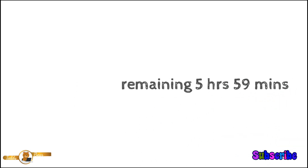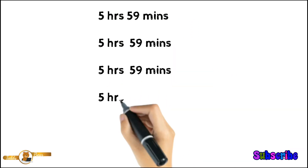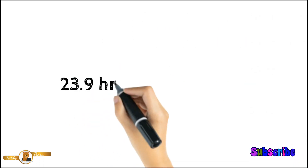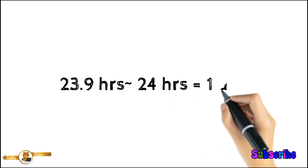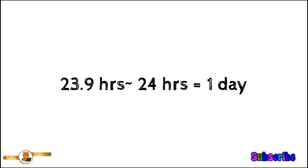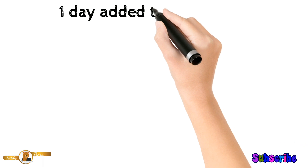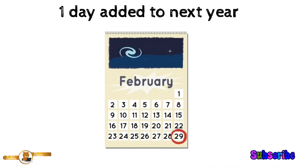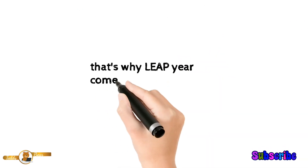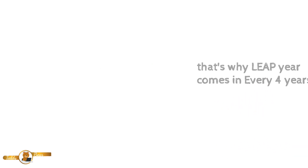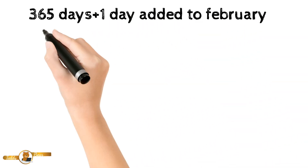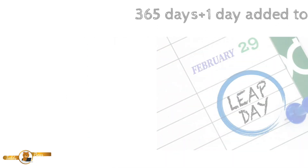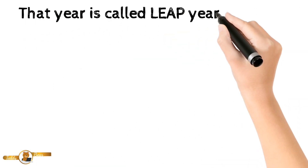The remaining 5 hours and 59 minutes are added up over 4 years. At the end of 4 years, it comes to 23.9 hours — approximately 24 hours. So we add 1 day to our calendar year once every 4 years, making every 4th year have 366 days. That is called a leap year.